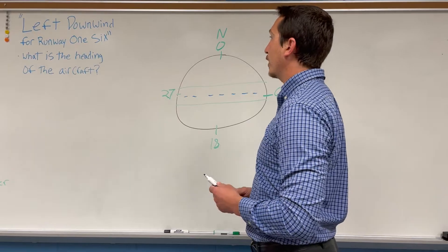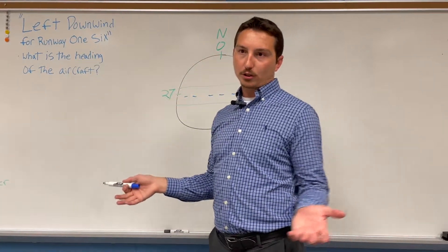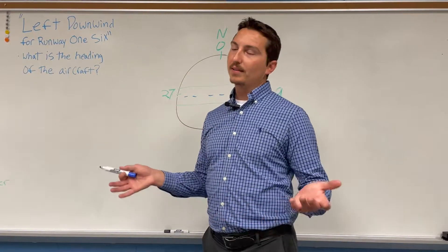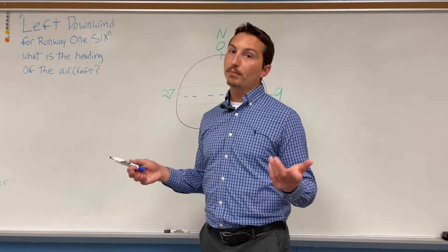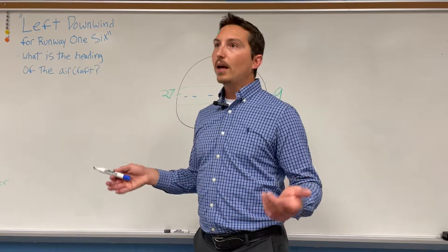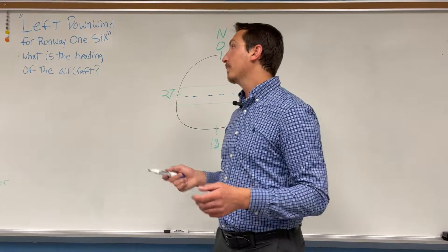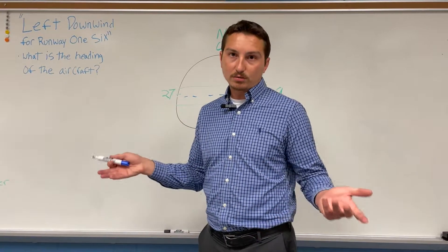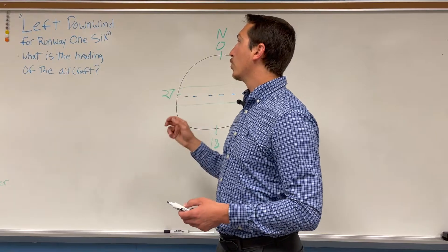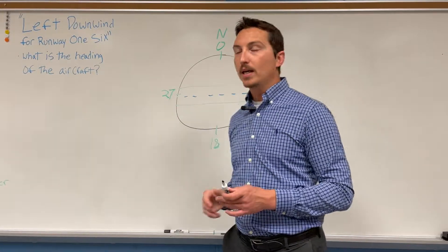Let's go to an example of one of these questions, because I think they're tough. Say you're monitoring CTAF at a local airport — and yes, I know as a drone pilot you may not often do this, but it gets asked on the test so you need to know it. You're listening to CTAF and a pilot announces left downwind runway 16. What is the heading of the aircraft — in other words, what direction is the aircraft moving in?